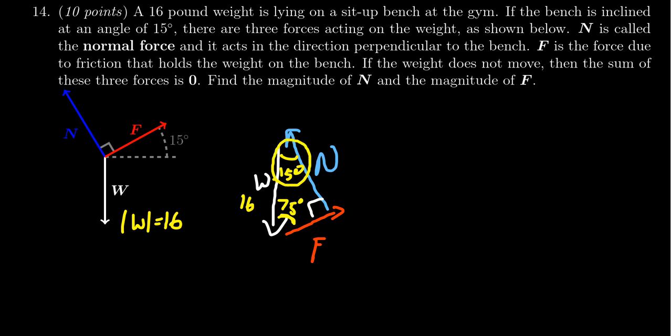the frictional force is the opposite side. The hypotenuse is the weight. This equals sine of the angle, which we'll call theta. So the frictional force equals the weight times sine of theta. That gives us F equals 16 pounds times sine of 15 degrees.